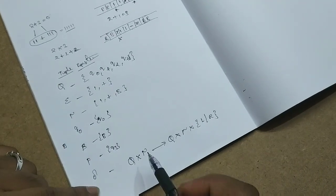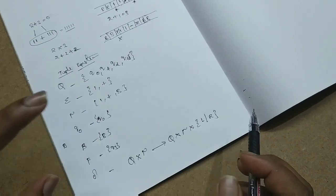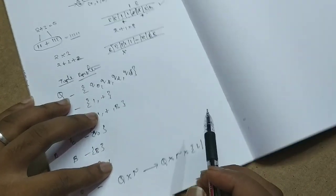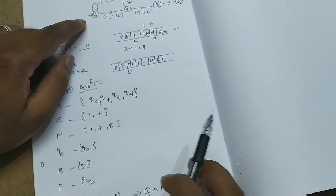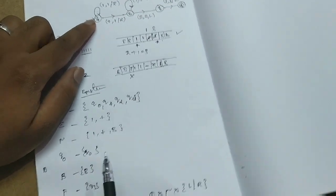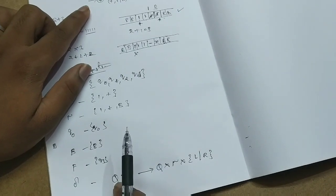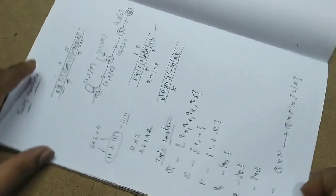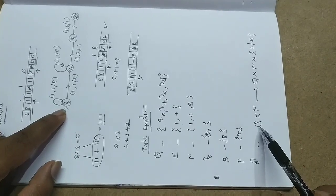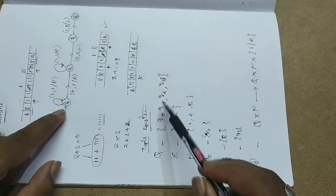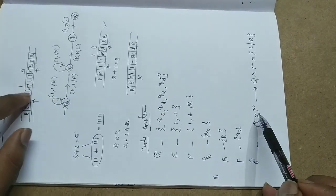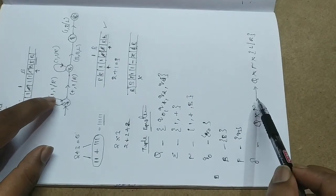This is important — the transition function. In the previous representation, the mathematical representative is delta. Here is the meaning: I am taking a symbol from Q — a state — and I am taking an input tape symbol.